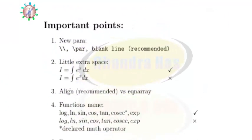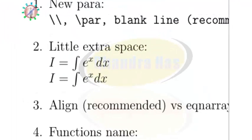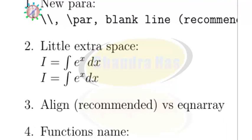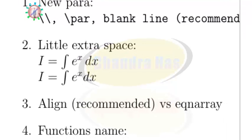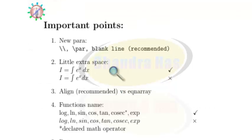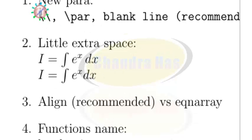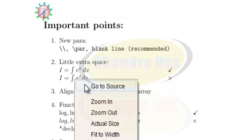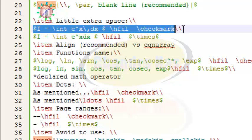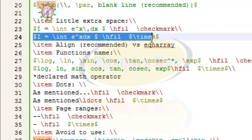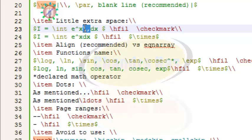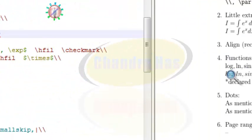In the second point, there are two integral equations. In the first integral equation, dx is separated by a small space compared to the second integral equation. The first one is the correct way to write the integral equation. Such a small space can be added by using backslash comma. So this is the first equation with backslash comma added, and the second is the normal equation which people generally write.